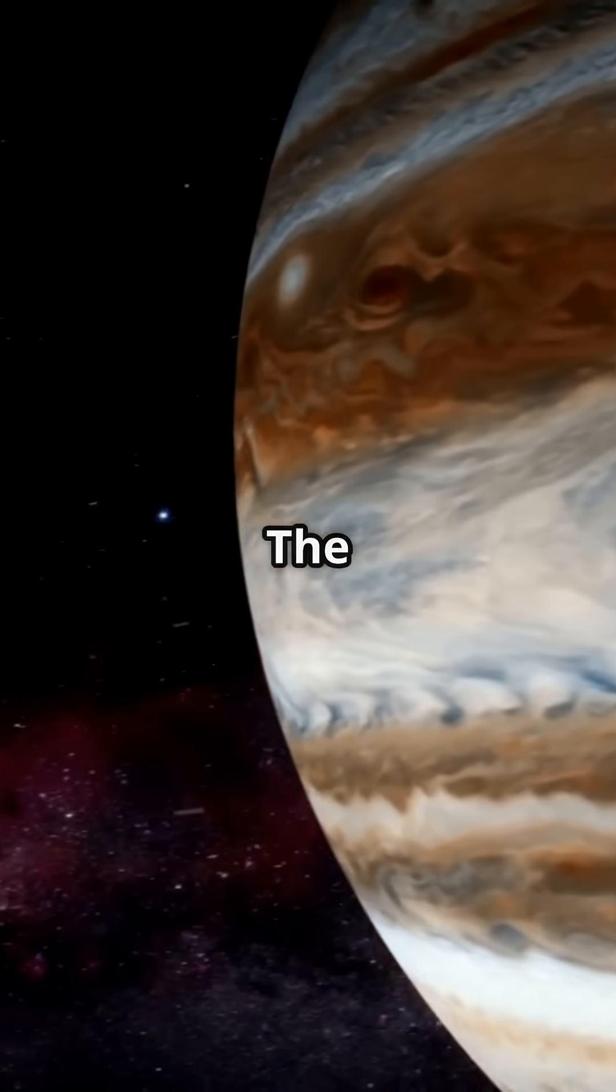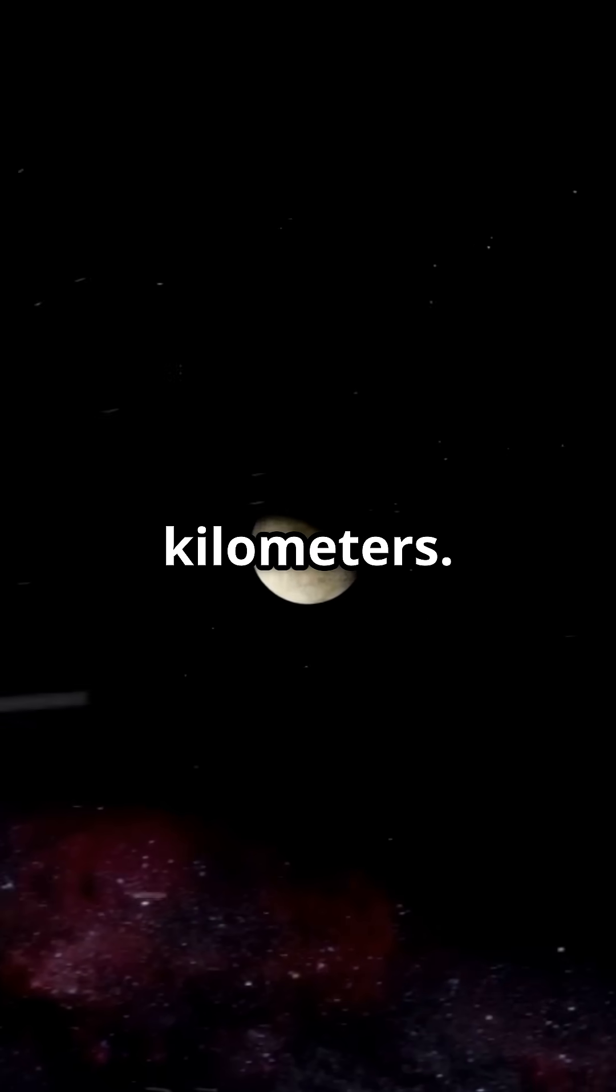First up, Jupiter. The king of our solar system with a diameter of 140,000 kilometers.